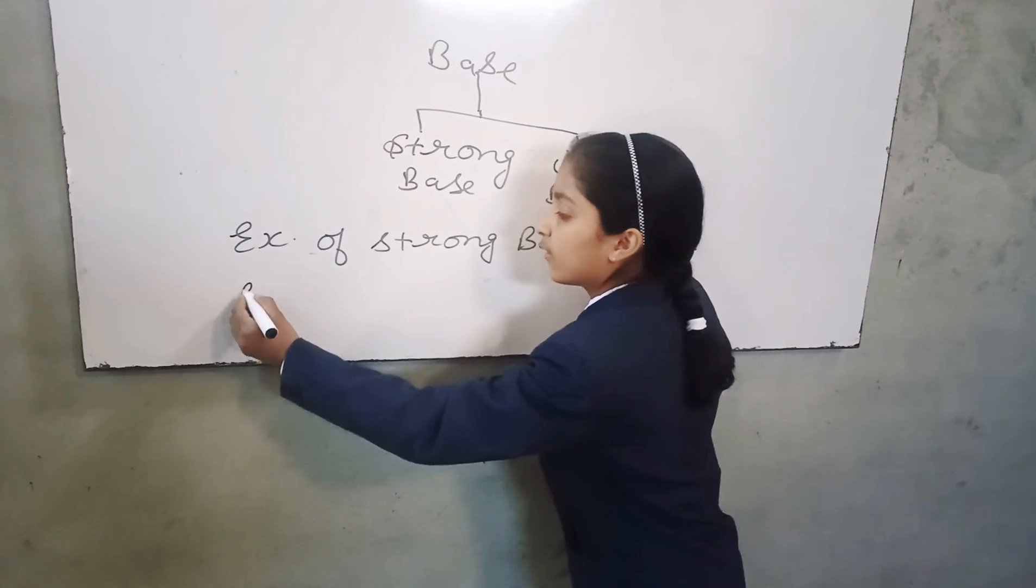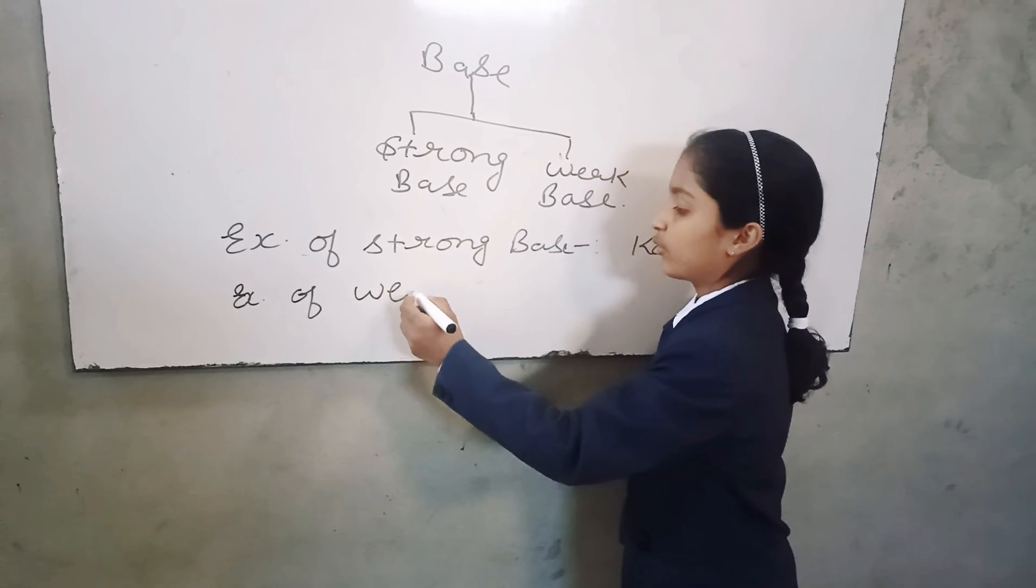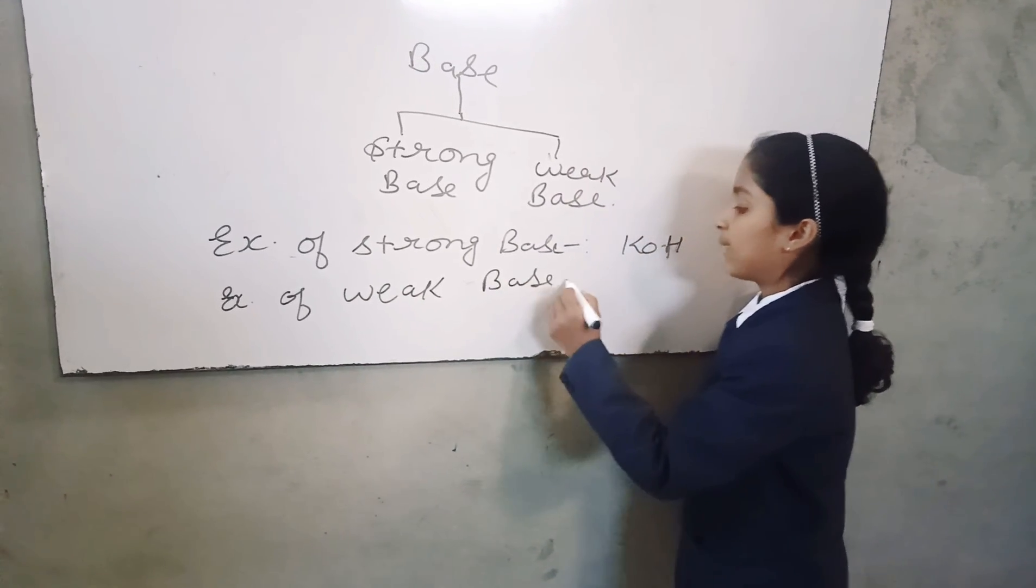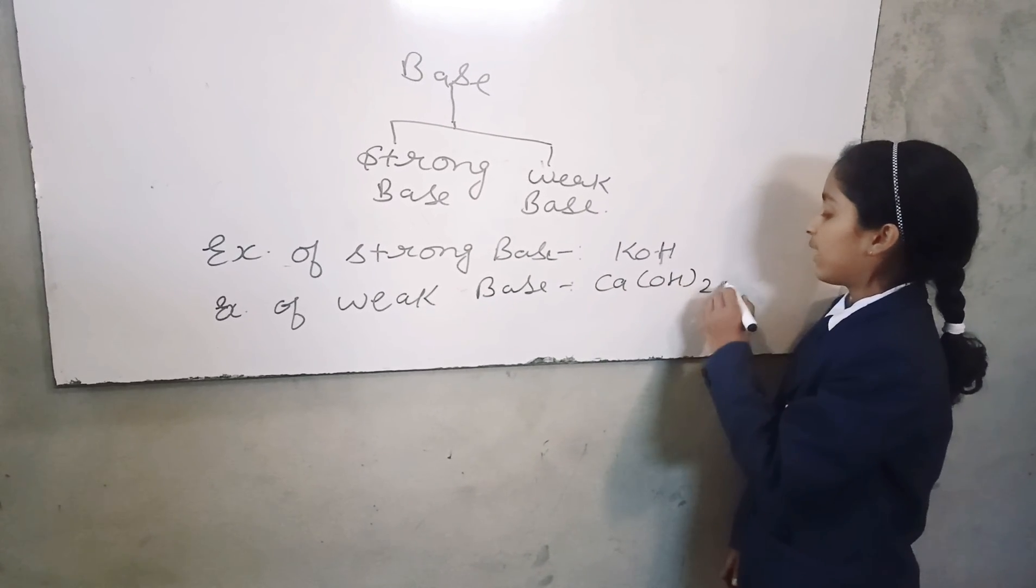Weak base. The base which do not completely dissociate in water are known as weak base. For example, Ca(OH)2, calcium hydroxide.